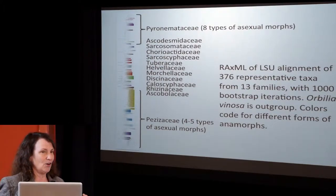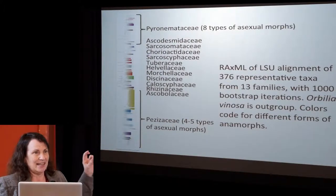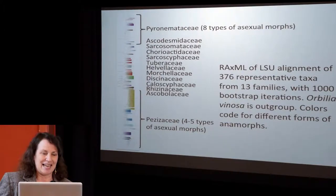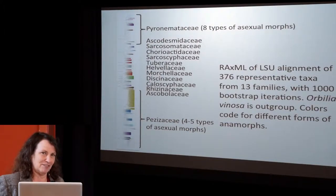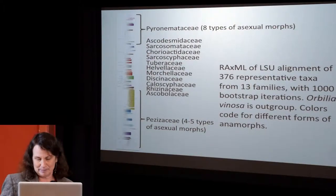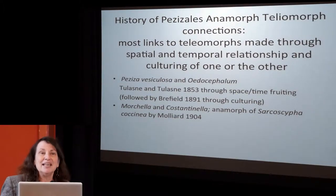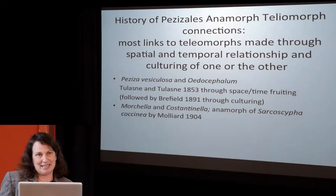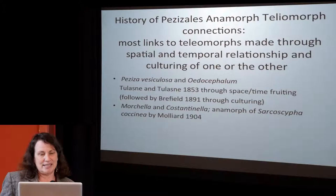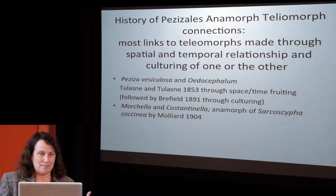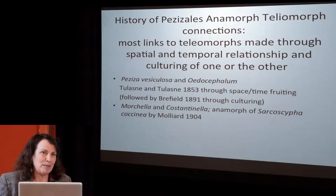What I've done is color-code each of the clades that have a different appearing anamorph, so you can see the variety of morph types within the Pezizales. As a brief history, the Tulane brothers were the first to make a connection, simply through observation of anamorphs being produced at the same time and place — in this case with Peziza vesiculosa, where the anamorph was known as Edocephalum. This was followed up by Breffield, who cultured it and obtained Edocephalum in culture, and culturing became the main way people were connecting anamorphs to teleomorphs.